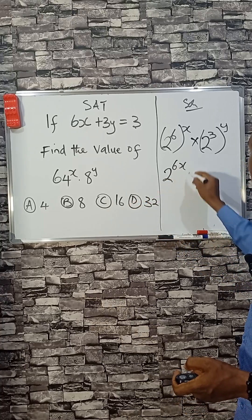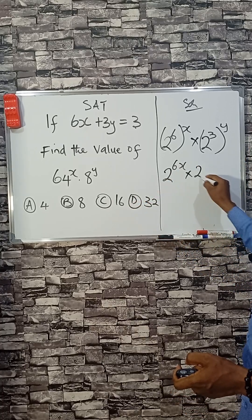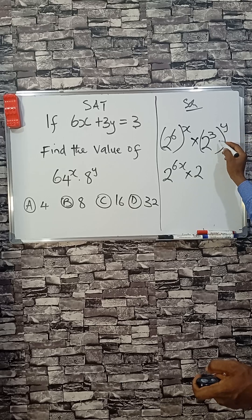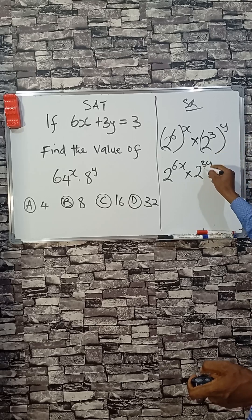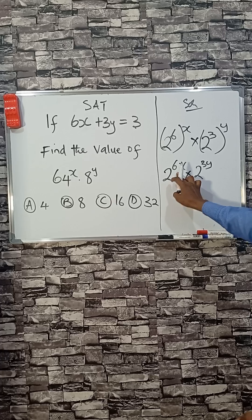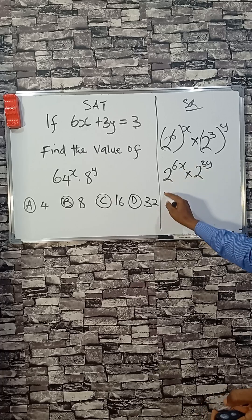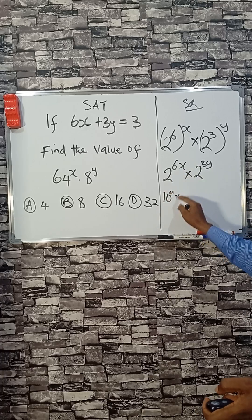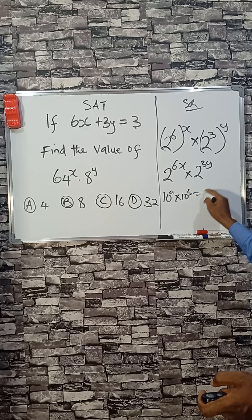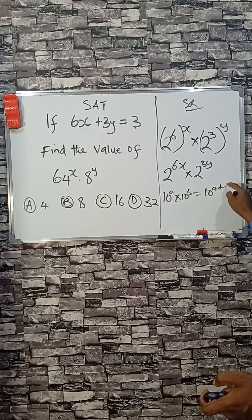So we have 6x and 3y. Don't forget that 10 raised to the power a times 10 raised to the power b is 10 raised to the power a plus b.